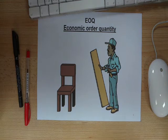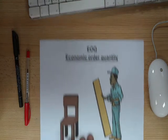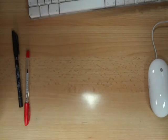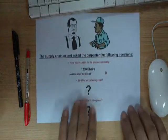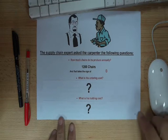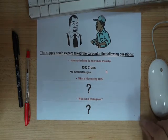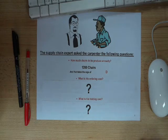He called a supply chain expert. The supply chain expert asked him the following questions: How many chairs does he produce annually? What is his ordering cost? And what is his holding cost?